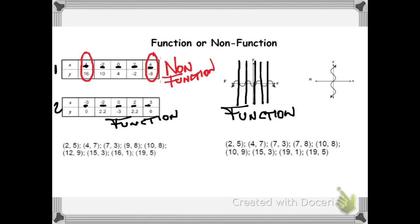Now in my second graph, if I imagine a vertical line — this time making it look like the y-axis — you will notice that the line will touch your graph in several points, more than once. That indicates that the same x value is paired with different y values, making it a non-function.